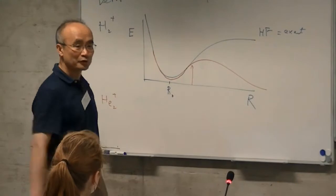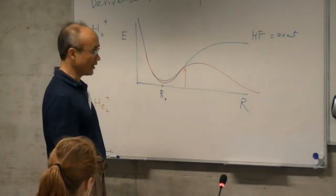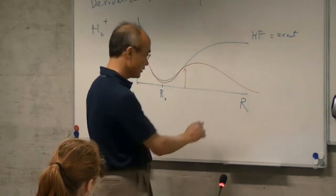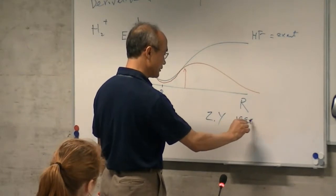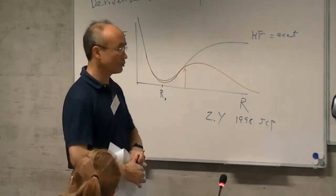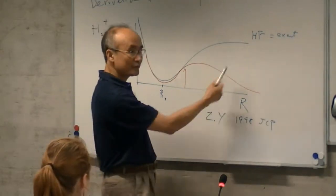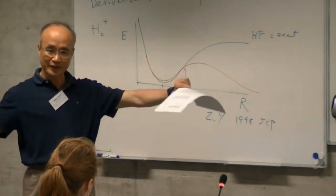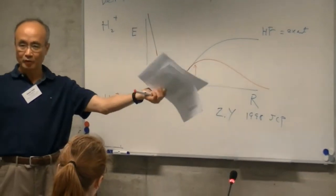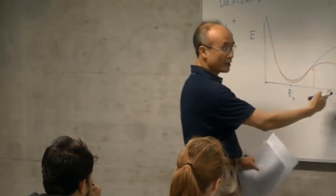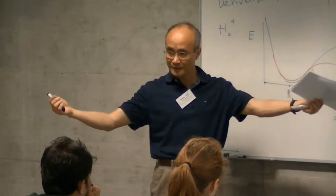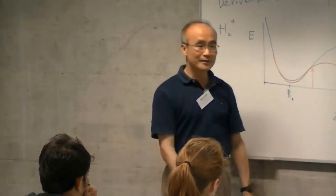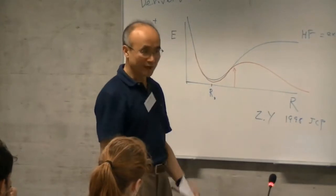This problem was recognized in the 90s. One paper of interest is Zhang and Yang, 1998, JCP. That paper analyzed this problem and pointed out that this was a self-interaction error problem related to fractional systems. Because when you dissociate H2+, you have two nuclei and one electron. The proper answer is the electron localized into one center, but as you stretch, you get half electron at one end and half electron at the other end. The energy for this is too low — that's the simple statement.